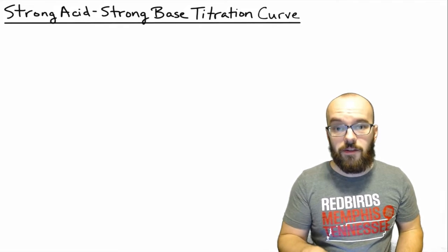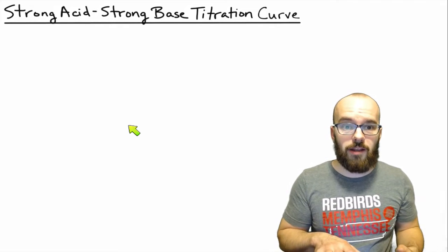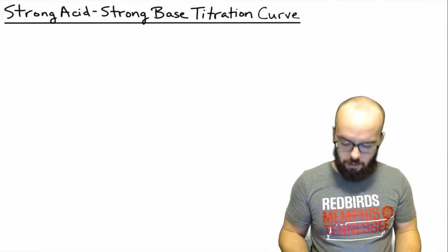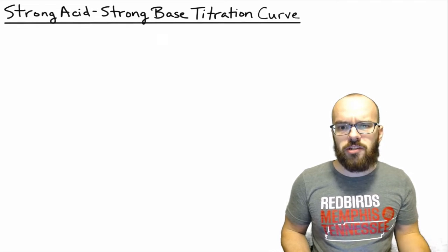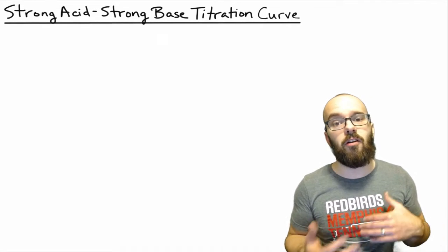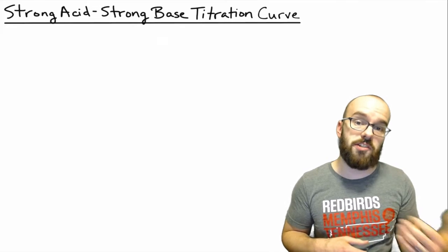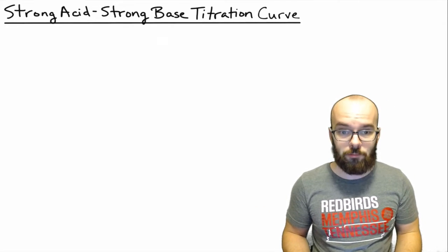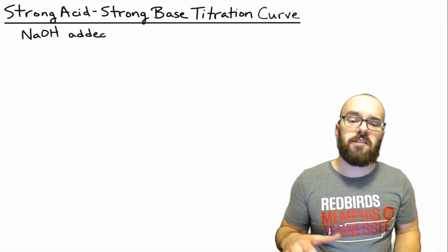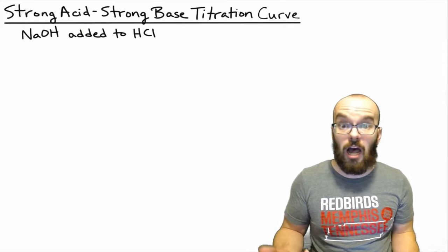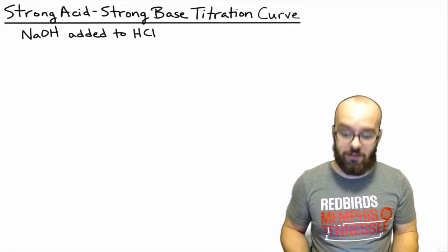Welcome to Memphys. In this video we're going to look at strong acid strong base titration curves. A titration is something that you would do in the chemistry lab if you're trying to find an unknown concentration of something, such as an acid, a base, or some other chemical. We're going to look at sodium hydroxide added to HCl, the common strong acid and strong base.